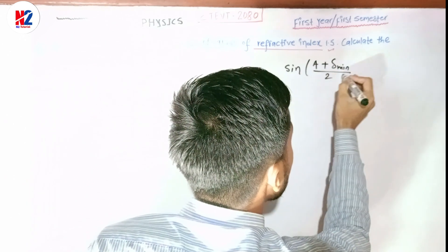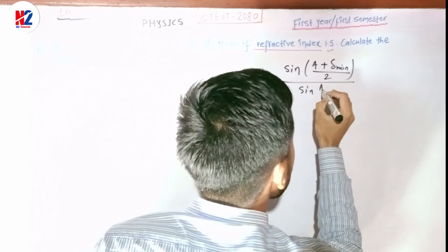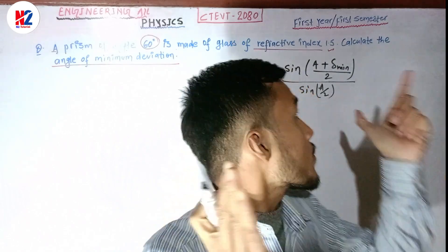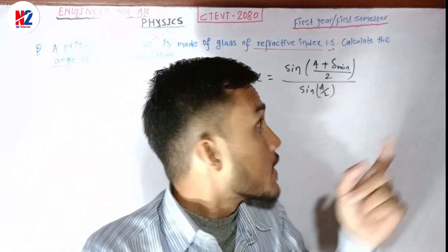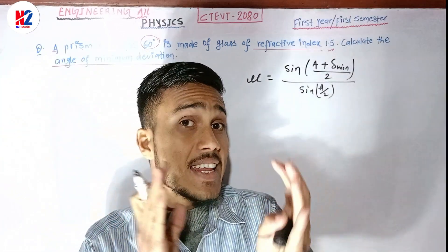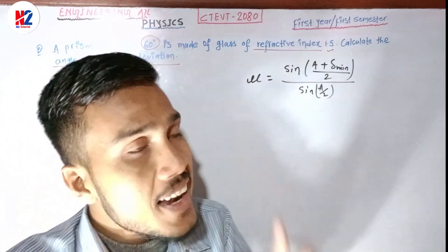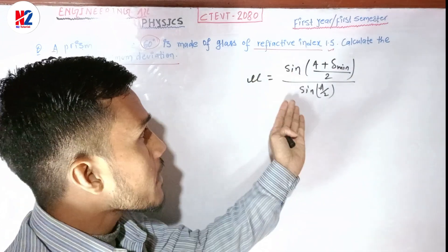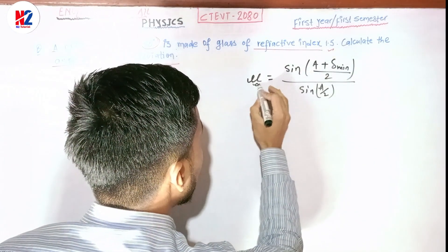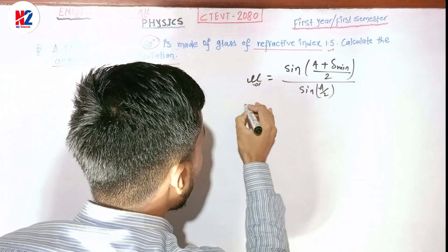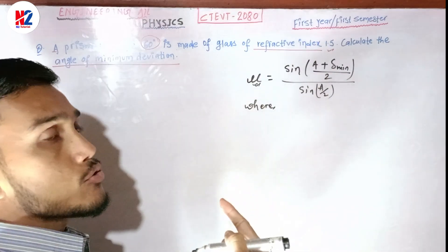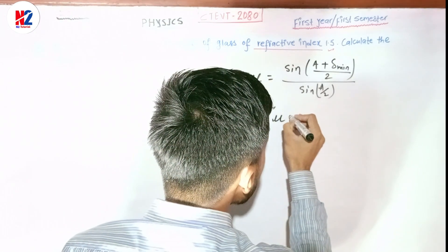The formula is: μ is equal to sin((A + δ_min) / 2) divided by sin(A / 2). Now let's understand the symbols used in this formula. μ denotes the refractive index - please pay careful attention to the meaning of each symbol before doing the numerical.